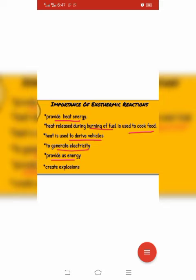The heat released from exothermic reactions also provides us energy during the process of respiration. Heat is produced during respiration in which glucose is broken down in the presence of oxygen, and as a result carbon dioxide, water vapors, and heat are produced. This heat is used to keep us warm and alive and provides us energy to perform our daily life activities.